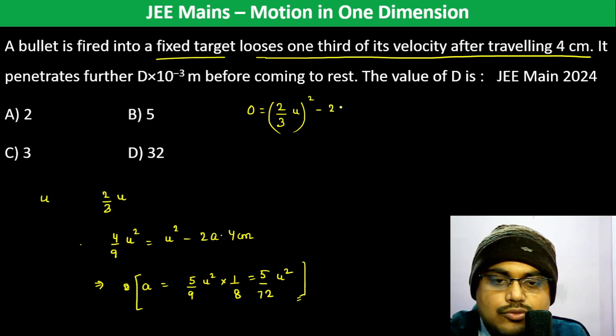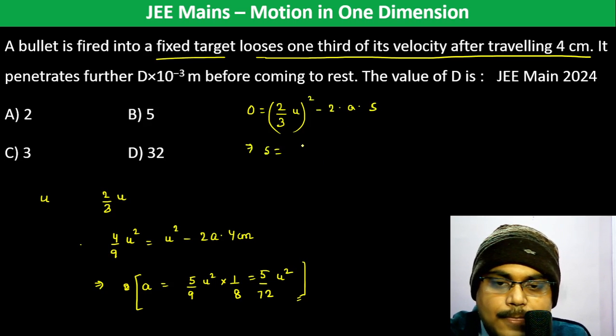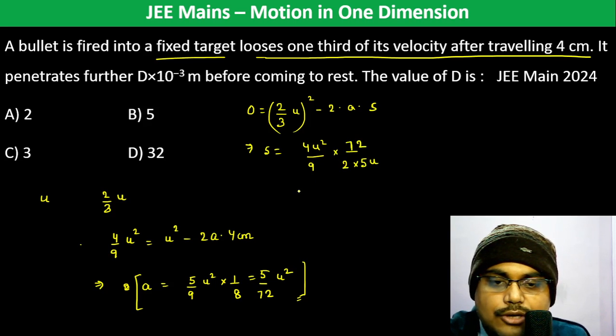minus 2 into a into s. S becomes 4U² by 9 into 1 by 2a, which is 5U² by 9 into 1 by 2 into 72.